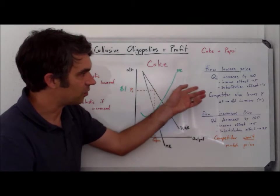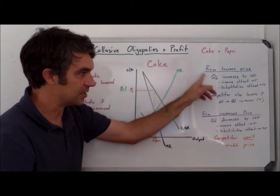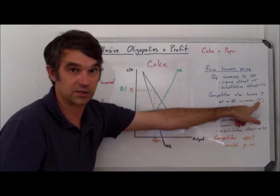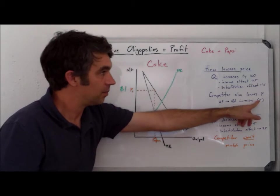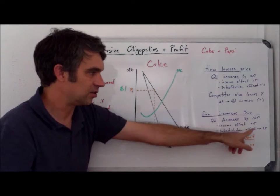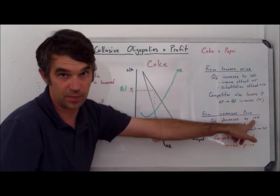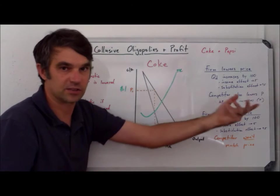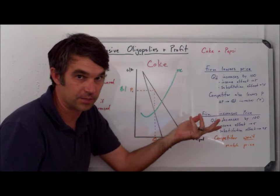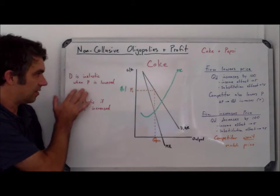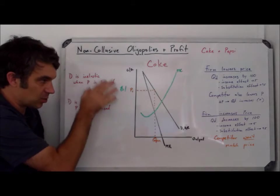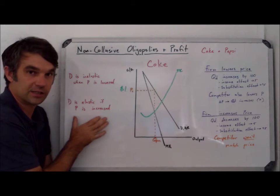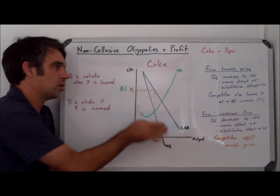So what we find is that when the firm lowers the price by 10%, they only gain a small number, maybe five if we're generous, of new demanders. But if they raise their price by 10%, they lose a much bigger number, a hundred competitors, most of that due to the substitution effect because they'll just go buy Pepsi instead. So then we get this conclusion that if demand is inelastic when price is lowered, demand is elastic when price is increased. But we don't see that shown on the demand curve.